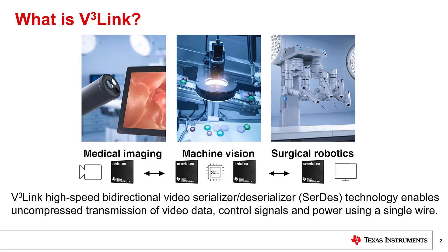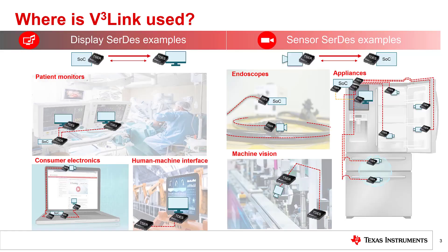vCubeLink is a high-speed, bi-directional video SERDES technology that enables uncompressed transmission of video data, control signals, and power using a single wire over several meters. vCubeLink SERDES are suitable for many different industries and equipment which require digital audio and video transfer over long cable distances. Pictured here are a few examples of vCubeLink as used in industrial environments, smart appliances, and medical equipment such as endoscopes and patient monitors.